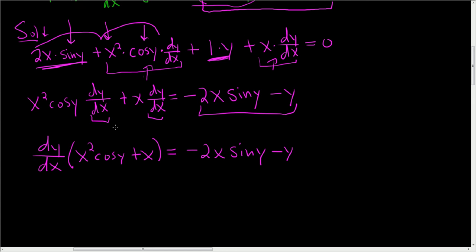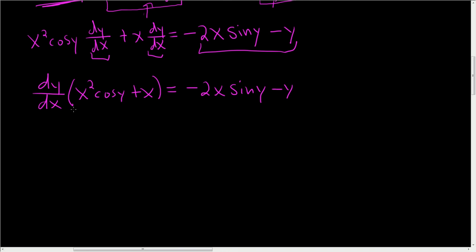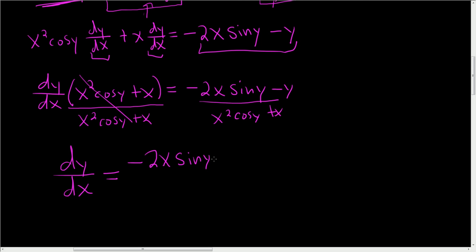All right, now we'll divide, and we are done. So, if you divide both sides by x squared cosine y plus x, this cancels, and you're left with dy/dx equals, let's see, negative 2x sine y minus y all over x squared cosine y plus x.